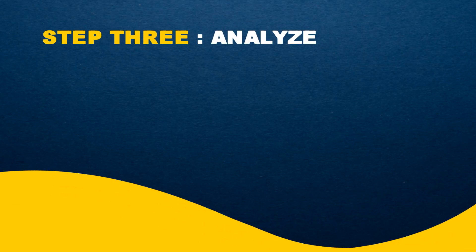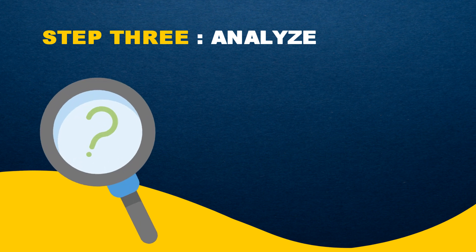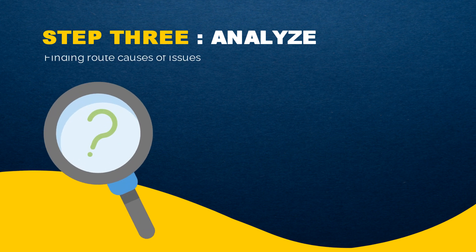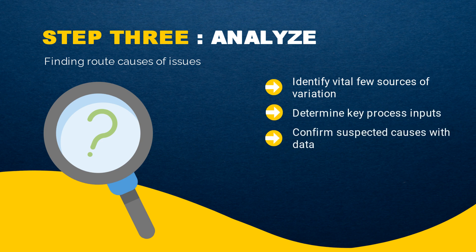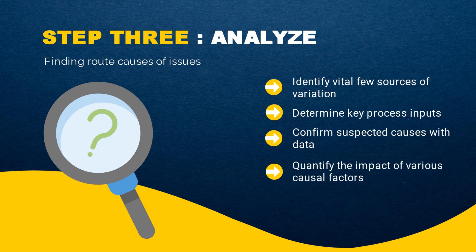Step 3: Analyze. Next you will need to start finding the root causes of the issue. You can identify vital sources of variation, determine key process inputs, confirm suspected causes with data, or quantify the impact of various causal factors.